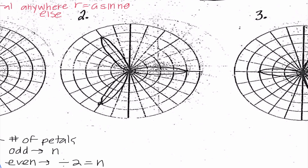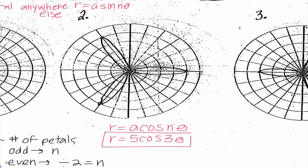Number two — once again, I can tell that this is a rose. This time it appears that we actually have a petal at zero degrees, so I know this is going to be an r equals a cosine nθ graph. My petals are going out one, two, three, four, five, so r equals 5 cosine n. It looks like we have three petals this time, and since that is odd, I'm going to keep it. So r equals 5 cosine 3θ.